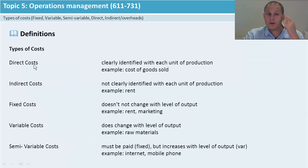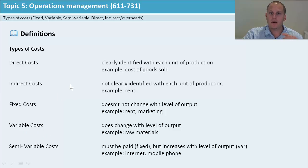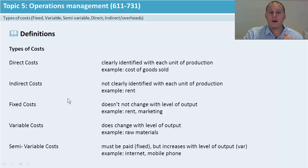For the definitions: direct costs are clearly identified costs linked directly to a product. So if you imagine the Coke can, the printing of the label is directly related to that product. But the aluminium used to make the can could go into all sorts of other Coke products — that would be the variable cost per unit. The printing of the label specifically on that Coke product is a direct cost. These are called your cost of goods sold on profit and loss statements, and when you add them all together you get your TVC.